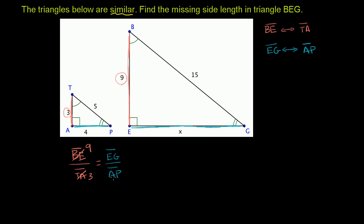And we also know what AP is, they give us that, it's length 4. So this boils down to 9 divided by 3, which is just 3, must be equal to EG.